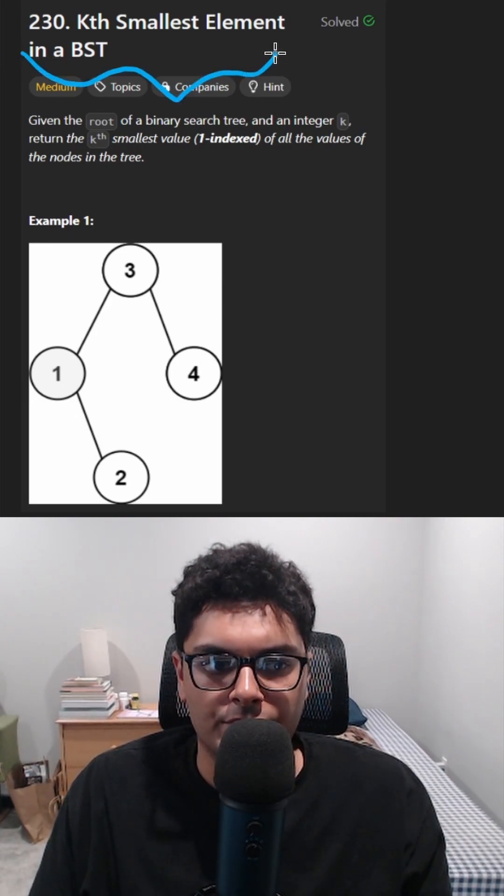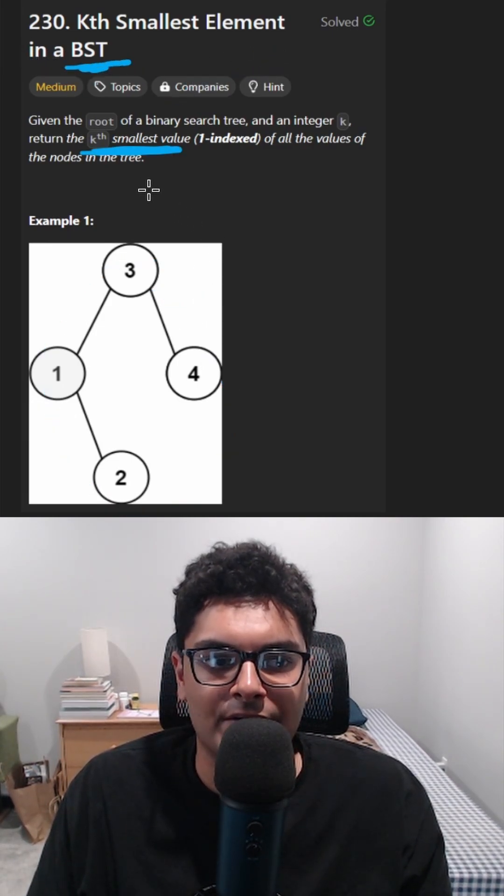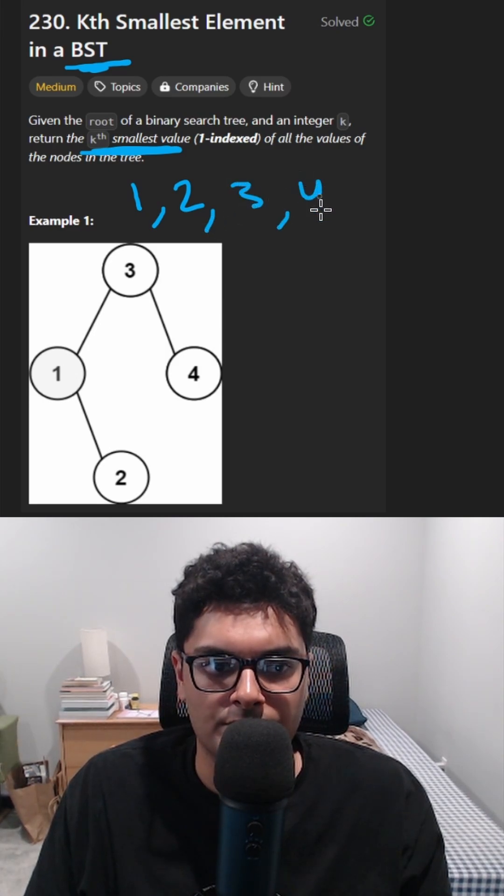Eighth smallest element in a binary search tree. So if you took all these values and put them in sorted order, it would look like this: one, two, three, four.